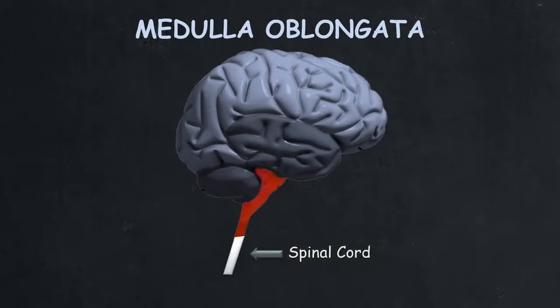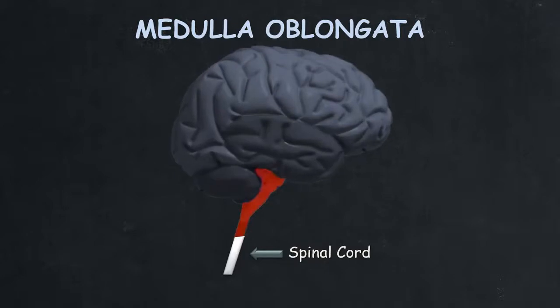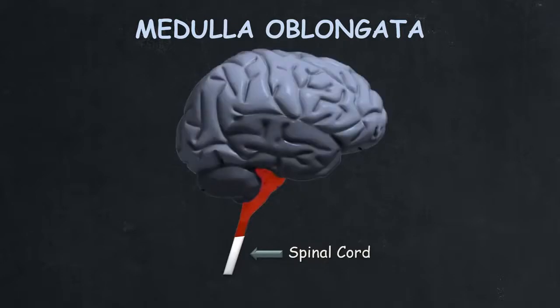The medulla oblongata connects the brain to the spinal cord. The connection is important because the spinal cord brings information from the nerves to the brain, and the brain sends its response to the spinal cord.